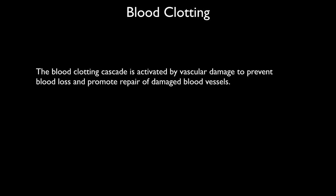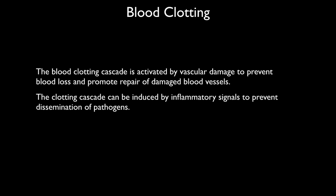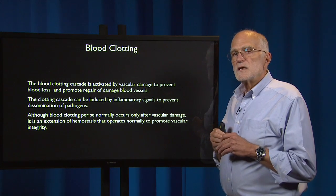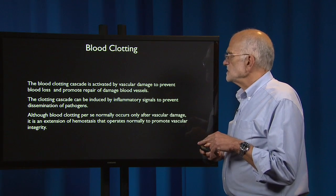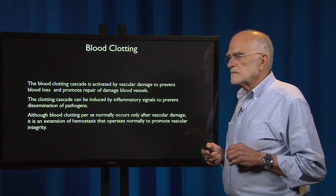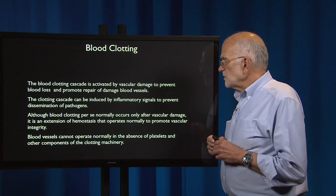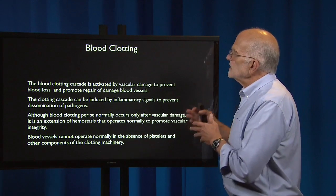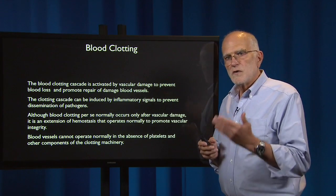Blood clotting is an extremely useful reaction. The blood clotting cascade is activated by vascular damage to prevent blood loss and it promotes repair of damaged blood vessels. The clotting cascade can also be induced by inflammatory signals to prevent dissemination of pathogens. Although blood clotting per se normally occurs only after vascular damage, it can be seen as an extension of hemostasis that operates normally to promote vascular integrity. Blood vessels cannot operate normally in the absence of platelets and other components of the clotting machinery — like these other functions, blood clotting is built upon a homeostatic mechanism.